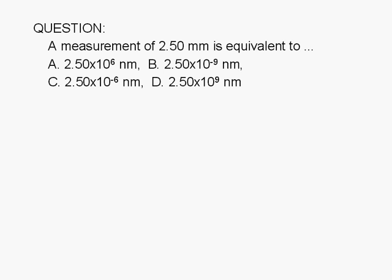A measurement of 2.50 millimeters is equivalent to how many nanometers? A: 2.50 times 10 to the 6th nanometers. B: 2.50 times 10 to the negative 9 nanometers. C: 2.50 times 10 to the negative 6 nanometers.